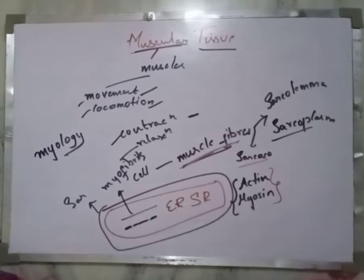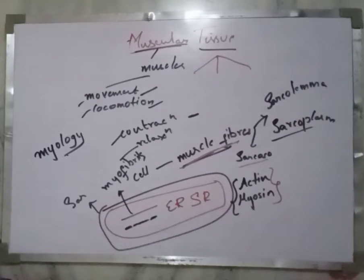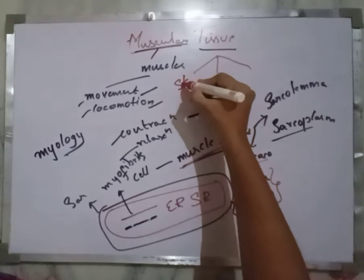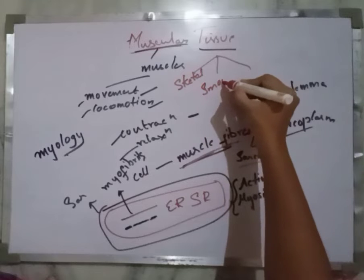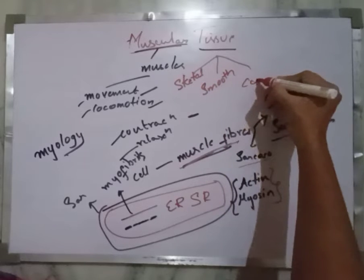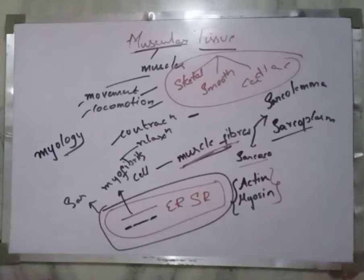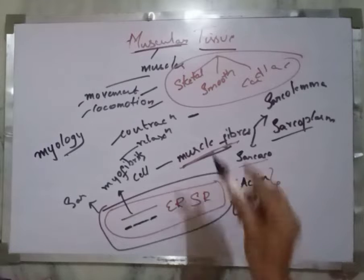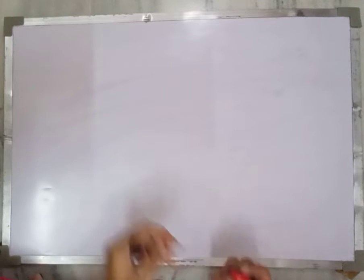The muscular tissue is classified into three types: skeletal muscle, smooth muscle, and cardiac muscle. We will now discuss each type in detail, beginning with the skeletal muscle.